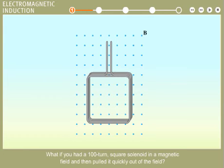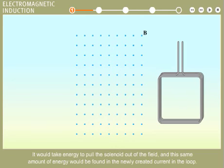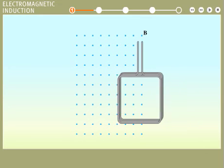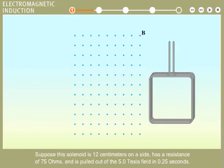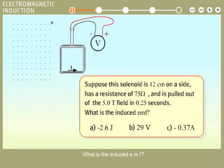What if you had a 100-turn square solenoid in a magnetic field and then pulled it quickly out of the field? It would take energy to pull the solenoid out of the field, and the same amount of energy would be found in the newly created current in the loop. You can think of this as the solenoid's resistance to being pulled out of the field. Suppose this solenoid is 12 centimeters on a side, has a resistance of 75 ohms, and is pulled out of the 5.0 Tesla field in 0.25 seconds. What is the induced EMF?